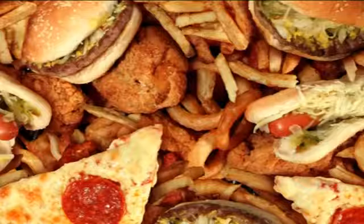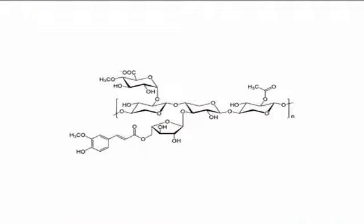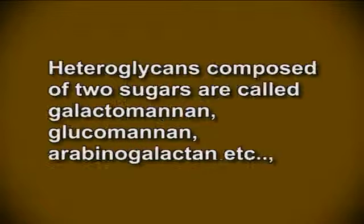Glycans that release only glucose on hydrolysis are known as glucans, and those releasing xylose are xylans. Depending on the sugar released on hydrolysis, other homoglycans are called mannan, galactan, fructan, etc. Heteroglycans composed of two sugars are called galactomannan, glucomannan, arabinogalactan, etc.